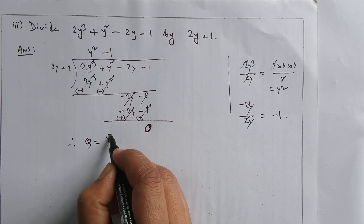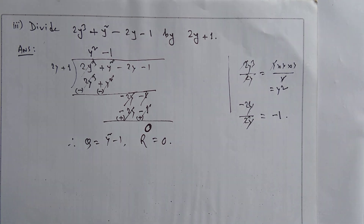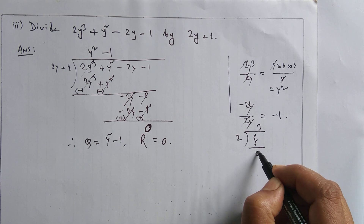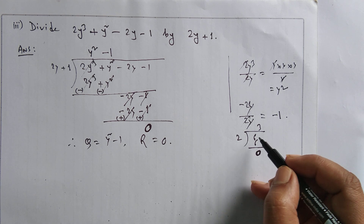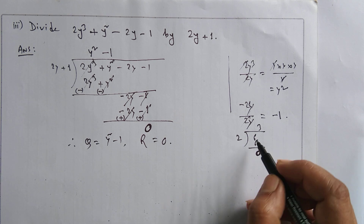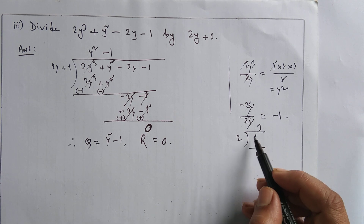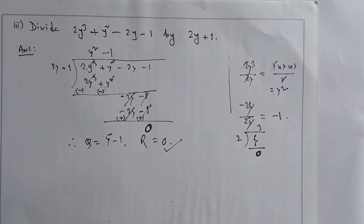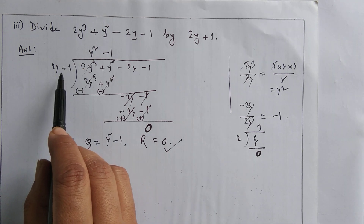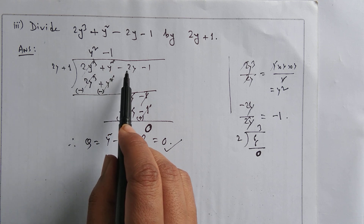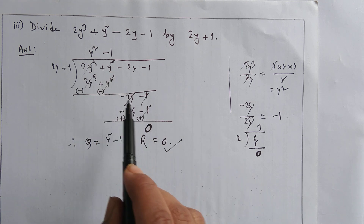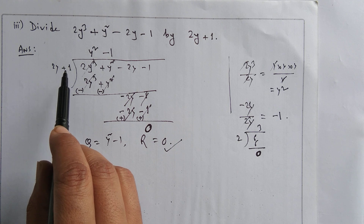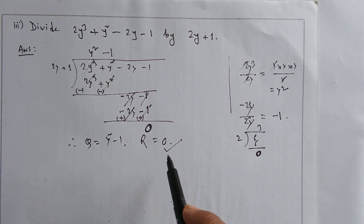Therefore the quotient is y² - 1 and the remainder is zero. Now, since the remainder is zero — just like when you divide 6 by 2, remainder is zero so 2 is a factor of 6 — similarly here, since the remainder is zero, 2y + 1 is a factor of 2y³ + y² - 2y - 1, or conversely, 2y³ + y² - 2y - 1 is a multiple of 2y + 1.